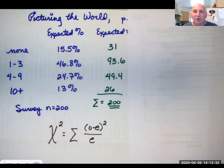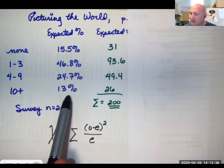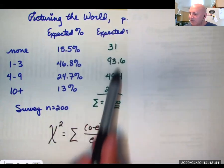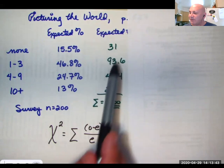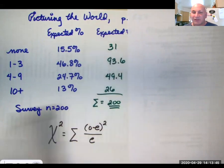So what we're saying in our null hypothesis here is either this distribution is correct. In other words, we'll get expected, we'll get observed values very close to these expected values. Or the alternate is it's not correct.